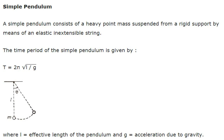Simple pendulum. A simple pendulum consists of a heavy point mass suspended from a rigid support by means of an elastic, inextensible string. The time period of this simple pendulum is given by T = 2π√(l/g), where l is the effective length and g is the acceleration due to gravity.